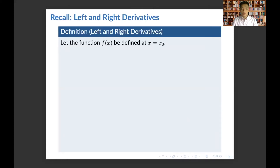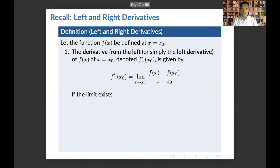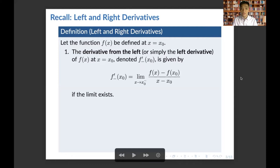Let's move on to left and right derivatives. Let f be defined at x equals x0. The left derivative, denoted f prime minus of x0, is given by the limit of f of x minus f of x0 all over x minus x0 as x approaches x0 from the left. The left derivative only has a value if this limit exists.